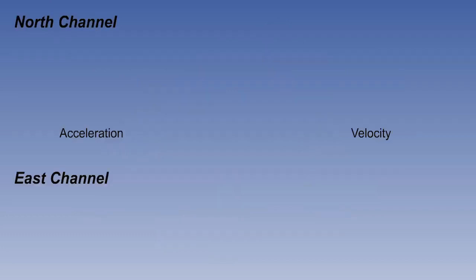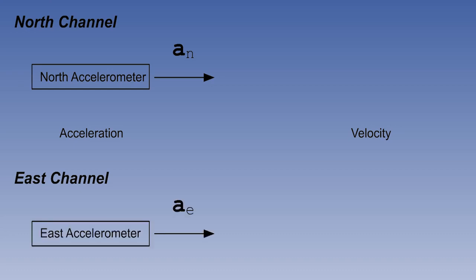The information flow in INS is organised into two channels, a north-south channel and an east-west channel. Each accelerometer senses accelerations, one in the north-south sense. These accelerations are labelled a subscript n here. If the aircraft accelerates southwards, that is simply a negative north acceleration. The other accelerometer senses its accelerations in the east-west sense, which are labelled a subscript e here. If the aircraft accelerates westwards, that is simply a negative east acceleration.